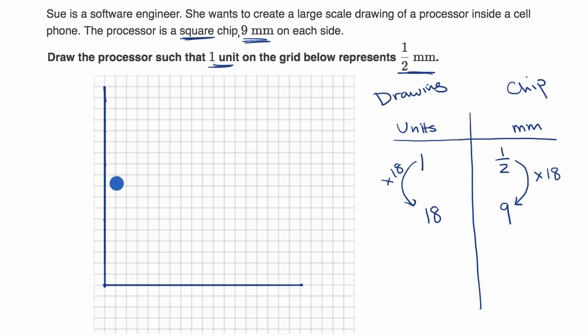All right. So just like that. And then I could draw the other parts of it. It would be like that. And then I would just go straight down like that. And there you have it. I have drawn a scale drawing of our processor. And we are all done.